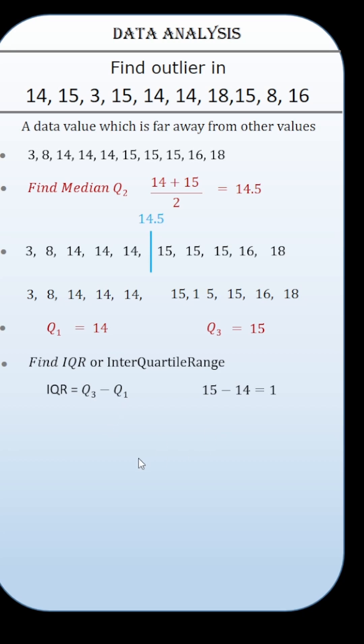Now, calculate the upper and lower fence of data. Calculate the upper fence of data by adding 1.5 times IQR to third quartile Q3.